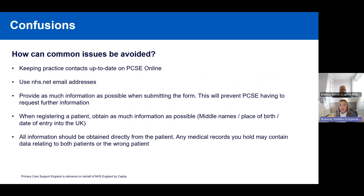To avoid common issues with confusions, keep your contact details up to date on PCSE Online so we can reach you quickly. Having NHS.net email addresses is preferred, as otherwise we would need to send information via secure methods such as Egress, which some practices have trouble opening. Providing as much information as possible upfront — any previous names, recent address history, previous GP registrations — will allow us to process the confusion at first attempt and avoid delays.